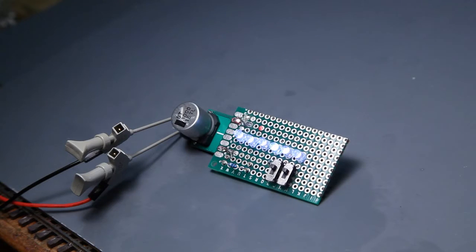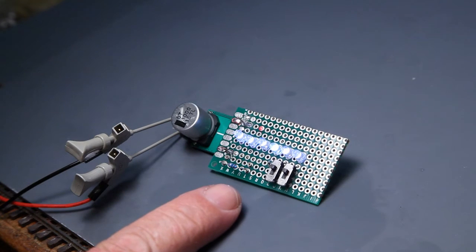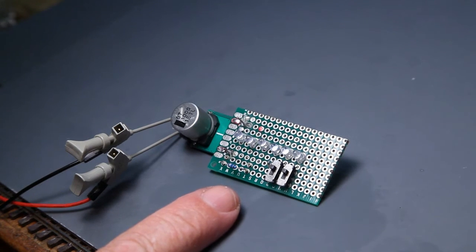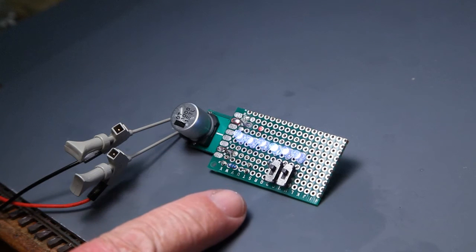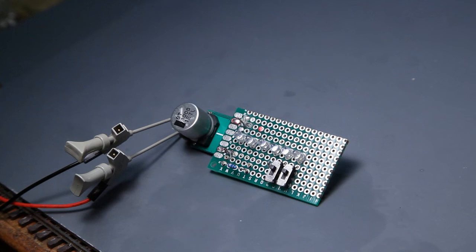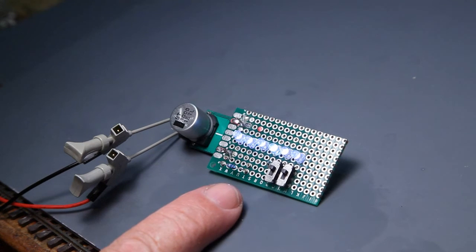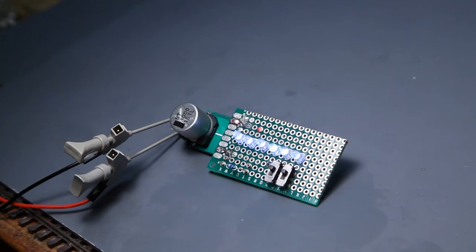Now we're going to show you a test of the lighting with six LEDs. It's a 1,000 microfarad capacitor. Every time I put the finger down, I've turned off the power. So you can see how long the LEDs will remain lighted.